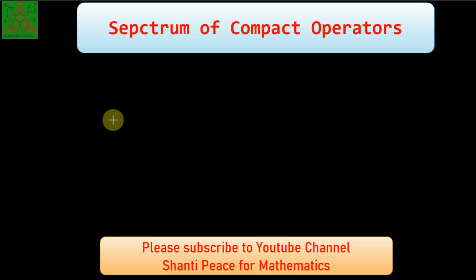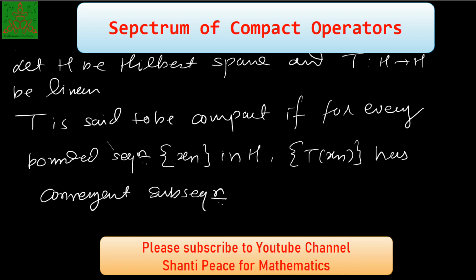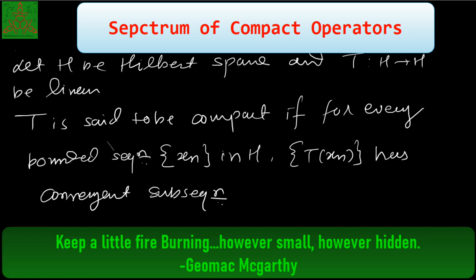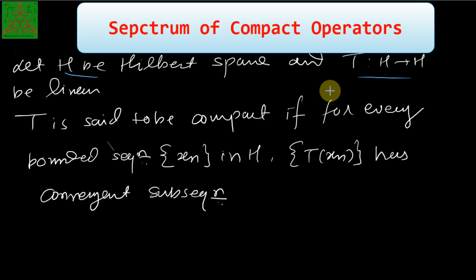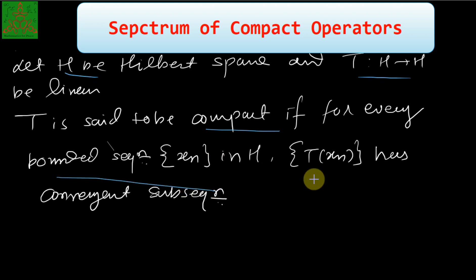Welcome to Santhi Peaceful Mathematics. In my previous video, we talked about the compact operator. Let us recall the definition: let H be a Hilbert space and T is a linear operator defined on H. T is compact if for every bounded sequence xn in H, T(xn) has a convergent subsequence. That is, the image of a bounded sequence has a convergent subsequence — this is called a compact operator.